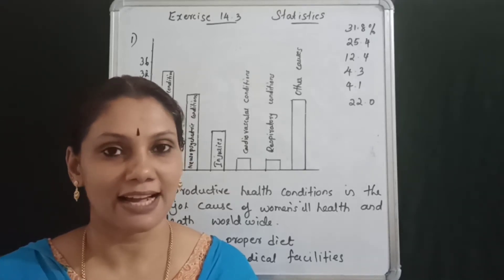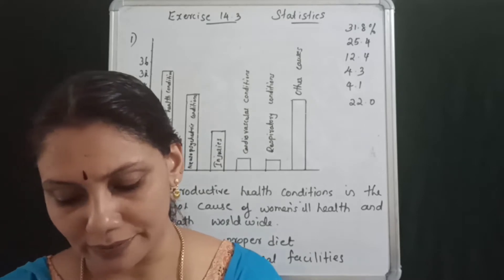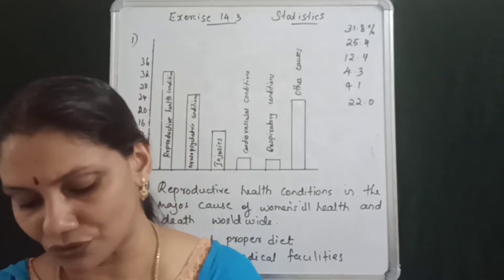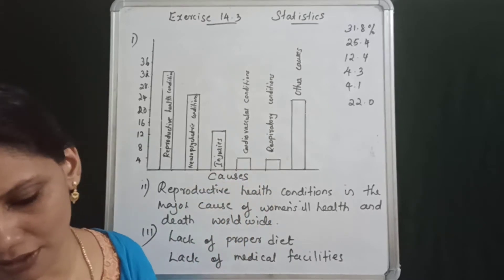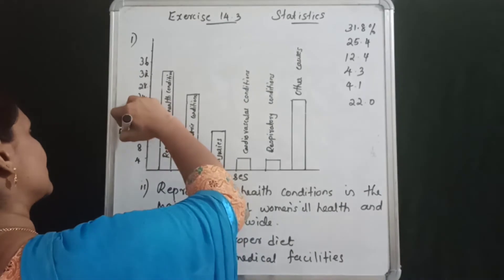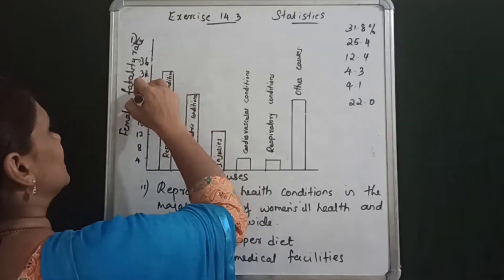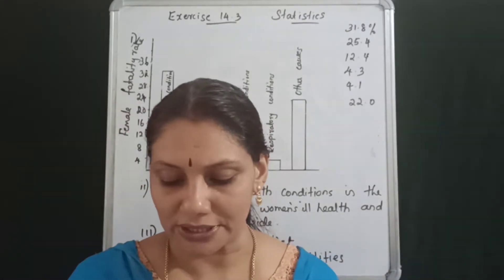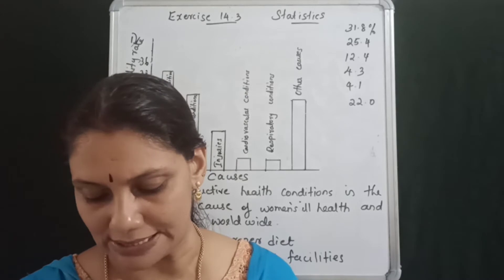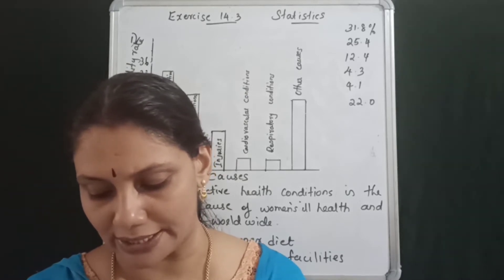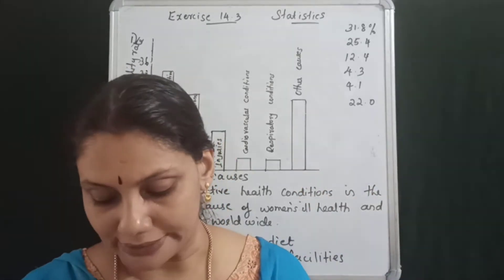Statistics exercise 14.3. A survey conducted by an organization for the cause of illness and death among women between the ages 15 to 44 years worldwide found the following figures: female adultery, Reproductive Health Conditions 31.8, Neuropsychiatric Conditions 25.4, Injuries 12.4, Cardiovascular Conditions 4.3, Respiratory Conditions 4.1, Other causes 22.